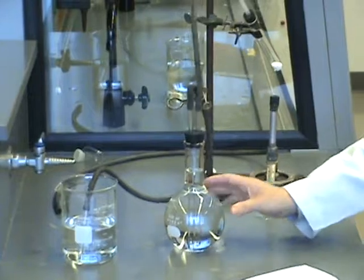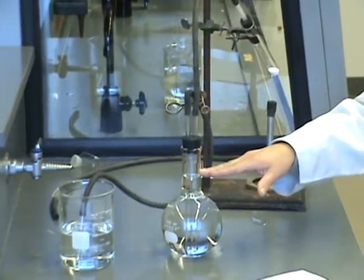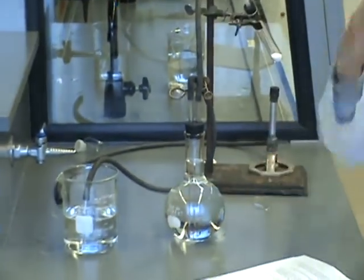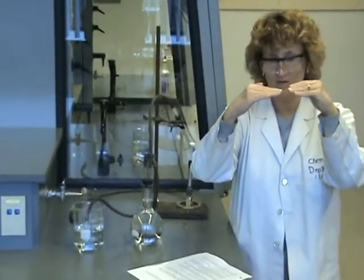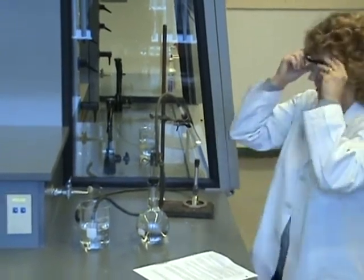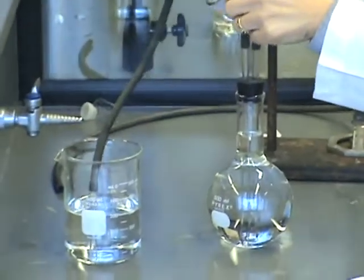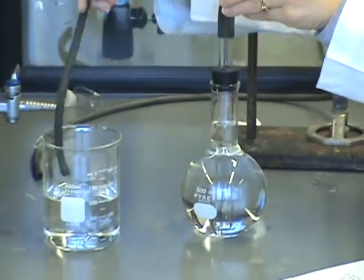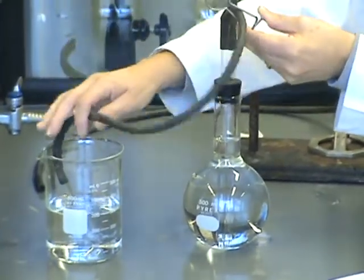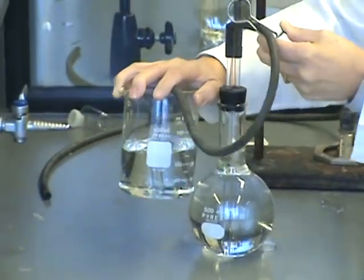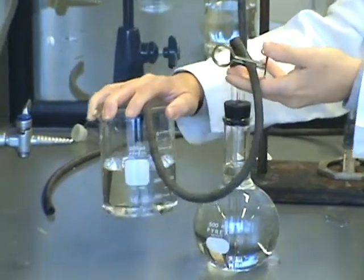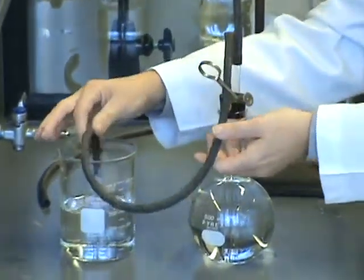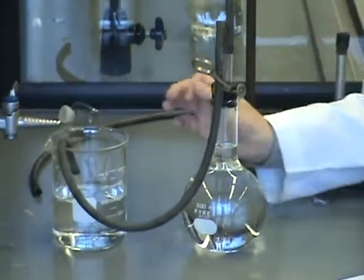I'm going to raise that beaker up so the water levels line up, and then I'm going to shut that clamp at that moment. So here we go. So I am opening the clamp to allow water flow. I'm going to hold that beaker up here. I just eyeball it, line them up visually, and I reclose the clamp. That was step seven.